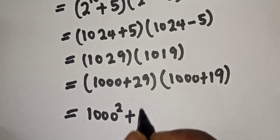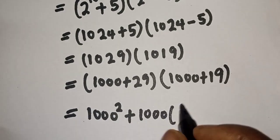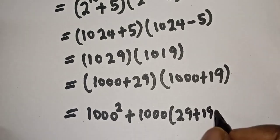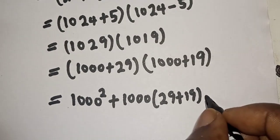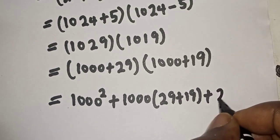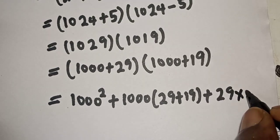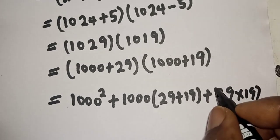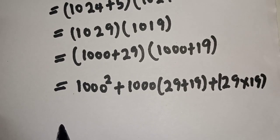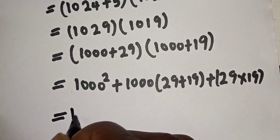Then this is equal to: let's multiply out. We have 1000 times 1000, which is 1000 squared. We have 1000 squared plus 1000 bracket 29 plus 19, plus 29 times 19.